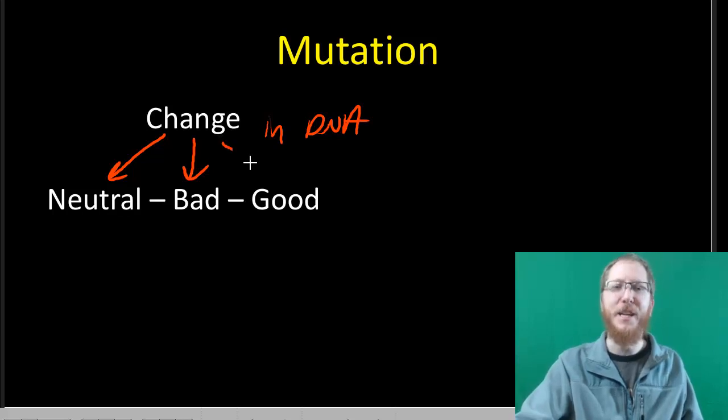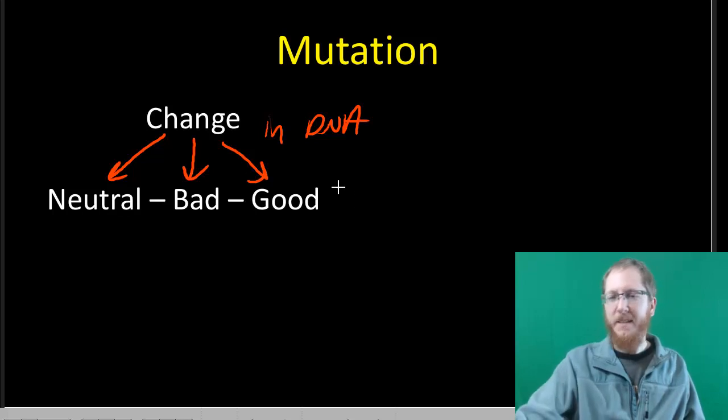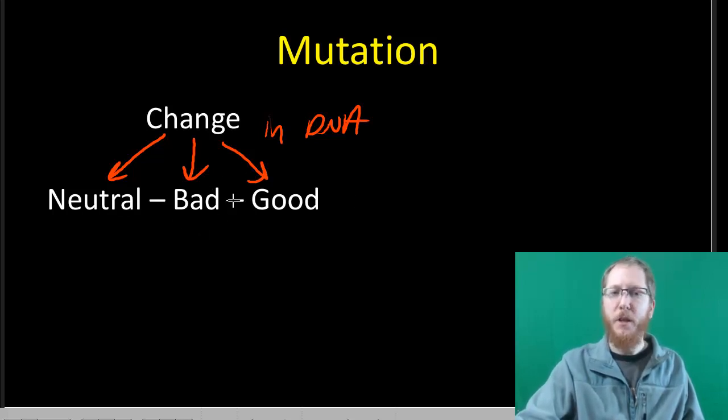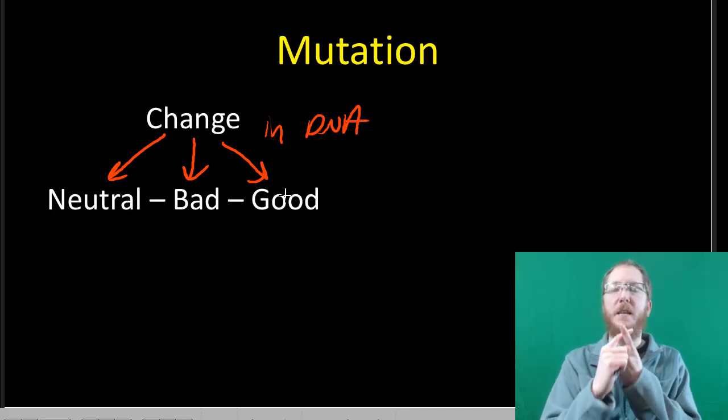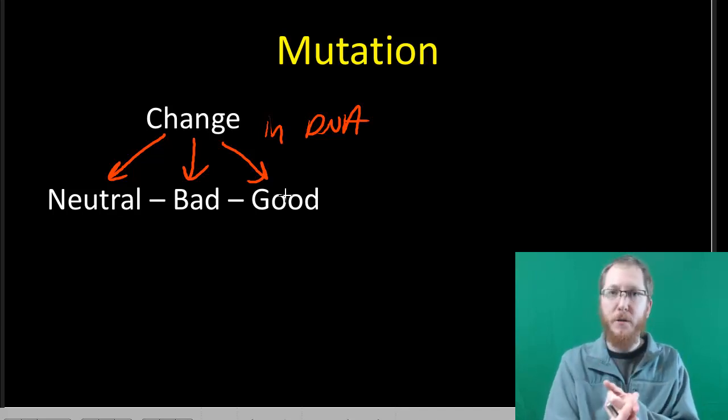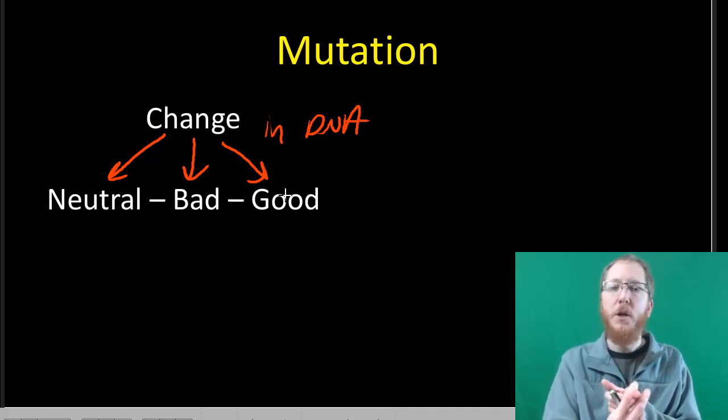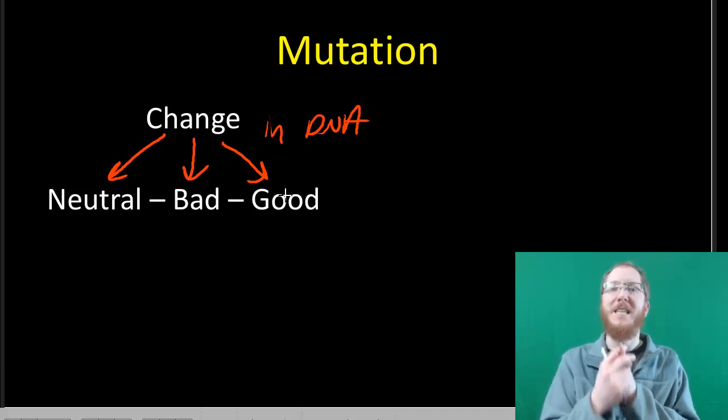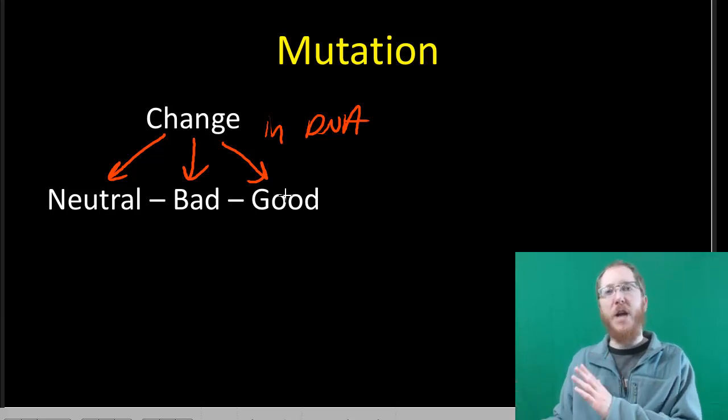Mutations can occasionally change things for the better. This is kind of like playing the lottery. In most cases, it's probably going to come out bad for you. But occasionally, someone does win, and that's going to be considered good. Occasionally, we can change something where it either makes the protein function better, kind of like if you change something in your car and it starts to run better than it did.